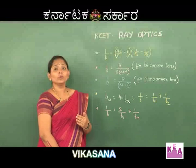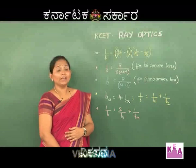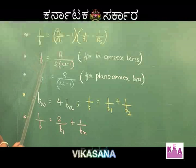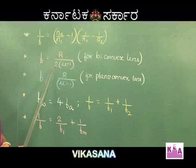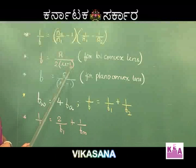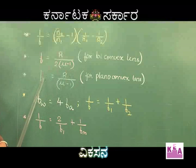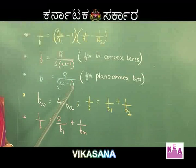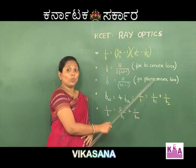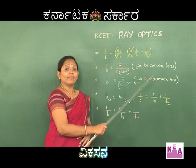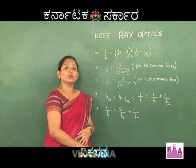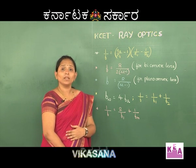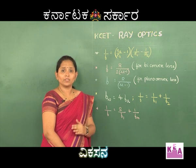Now let us move on to the focal length for a biconvex lens, which is given by f = R / (2(μ − 1)). In the case of a plano-convex lens, the focal length is given by f = R / (μ − 1). In a plano-convex lens, one of the surfaces is the plane surface where the radius of curvature is equal to infinity. In your classes you would have also learnt about image formation at different positions of objects using ray diagrams.